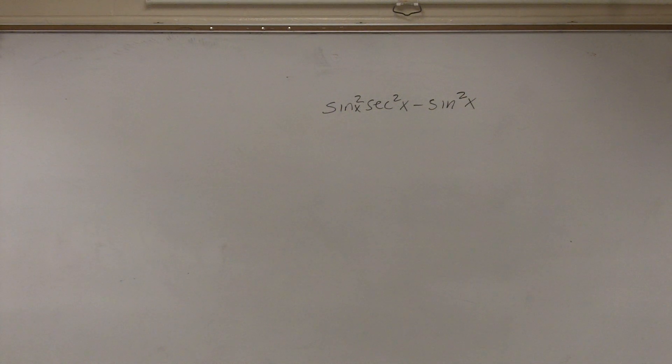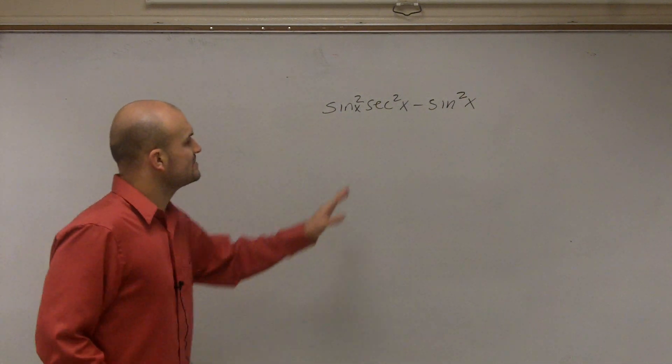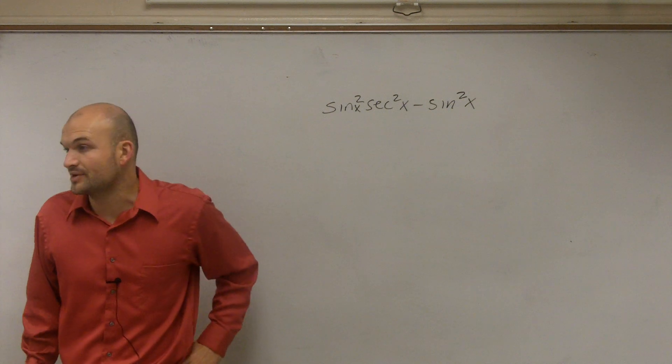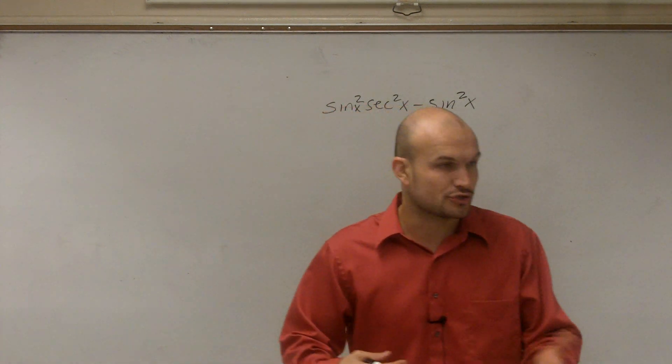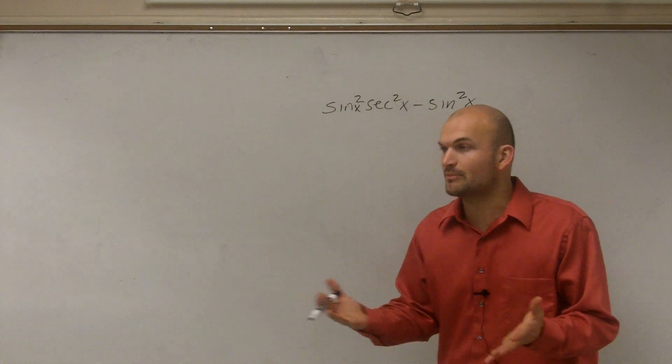All right, so ladies and gentlemen, it says sine squared of x times secant squared of x minus sine squared of x. And what it asks us to do is simplify by factoring, and then use your trigonometric identities to simplify further.